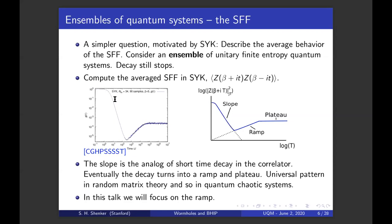So here's a picture of the numerical calculation of the spectral form factor in SYK. It decays, we call this region the slope, but then that decay stops and you enter a ramp and a plateau. This is the analog of the short time behavior decay of the correlation function. And eventually, the ramp and plateau take over. These structures are universal patterns in random matrix theory. And by this widely held conjecture, they should be universal features in a quantum chaotic system as we see in the SYK model. So in this talk, I'm going to focus on this ramp, the first signal of the lack of decay.